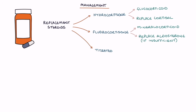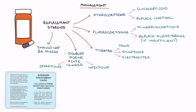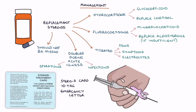The doses should not be missed as they're essential to life. The doses are doubled during an acute illness — for example during operations or infections — to match the normal steroid response to illness. Patients are given a steroid card, ID tag and emergency letter to alert emergency services that they're dependent on steroids for life. Patients and close contacts are taught how to give intramuscular hydrocortisone in an emergency.